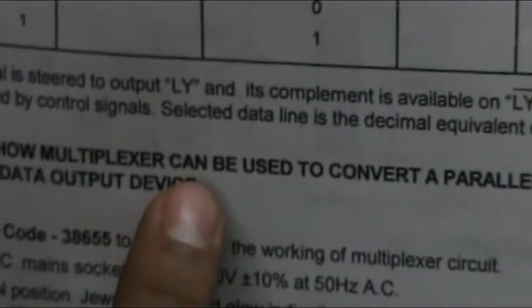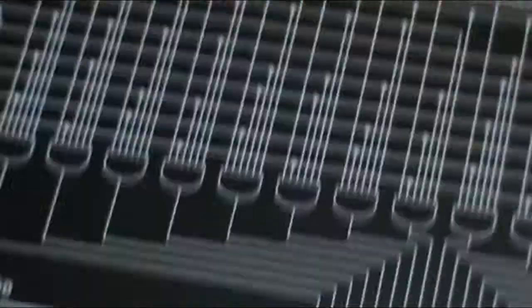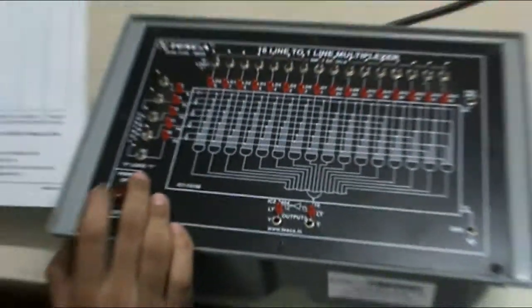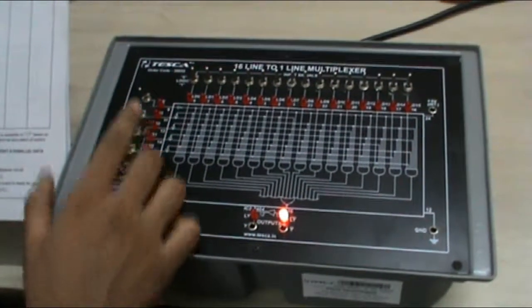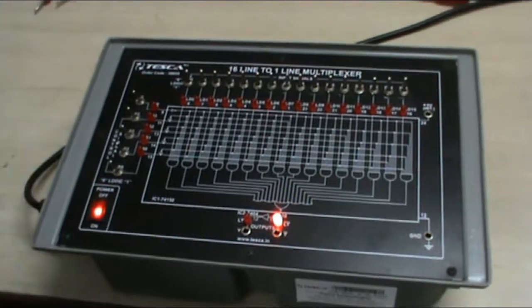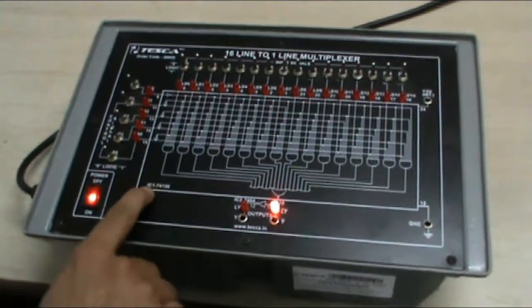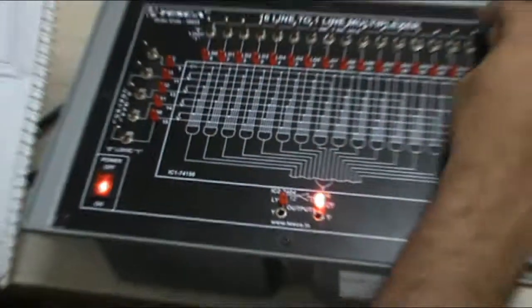That's it in experiment 1. Now we move on to experiment 2. In this we demonstrate how multiplexer can be used to convert a parallel data input to a serial data output device. For this, switch off the supply first. Now switch on the supply. Put the enable switch to 0 logic. This condition will enable the IC1.